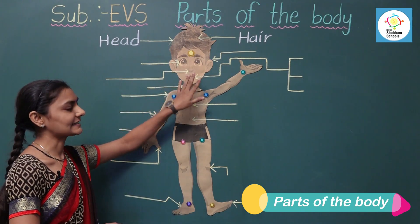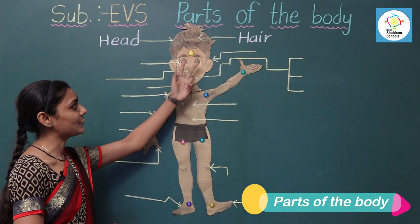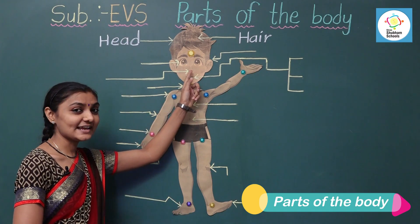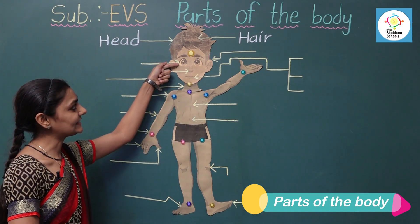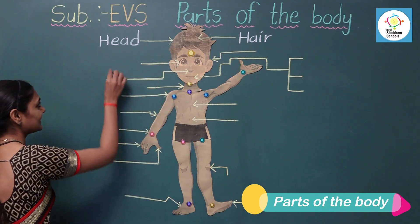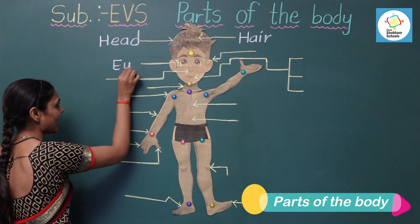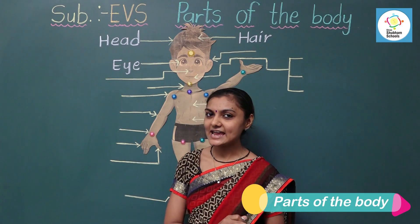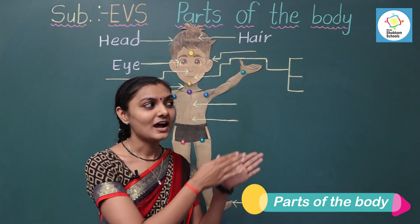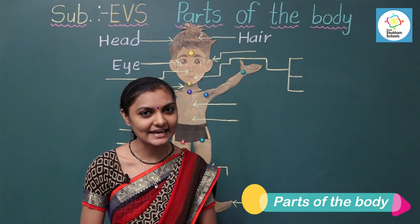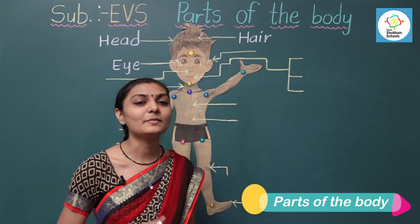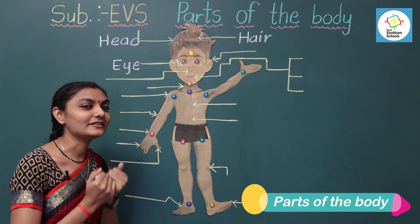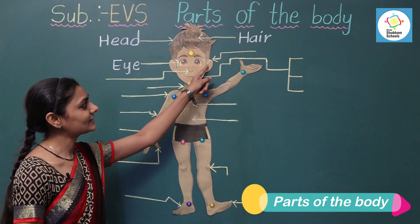The next one is our face. We have two eyes, one nose, two ears, one mouth, two cheeks and one chin. This is our eye — E-Y-E. We have two eyes. We can see with our eyes and we can also read with our eyes. The next one is ear — E-A-R. We have two ears. We can hear with our ears and we can also listen to music with our ears.